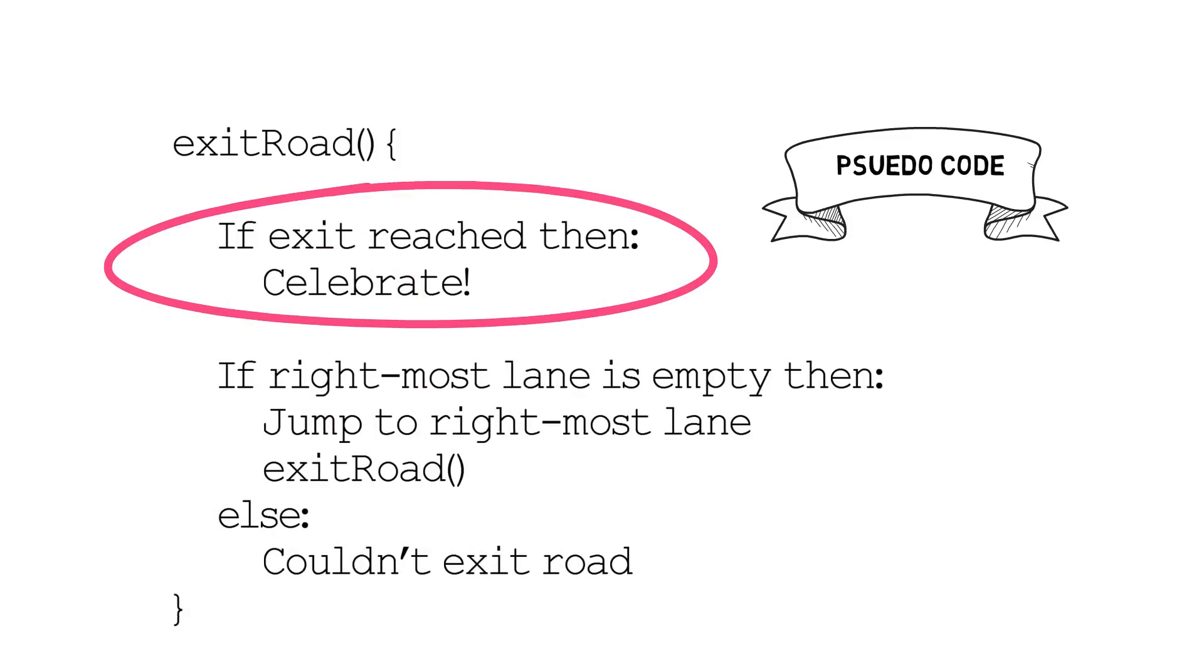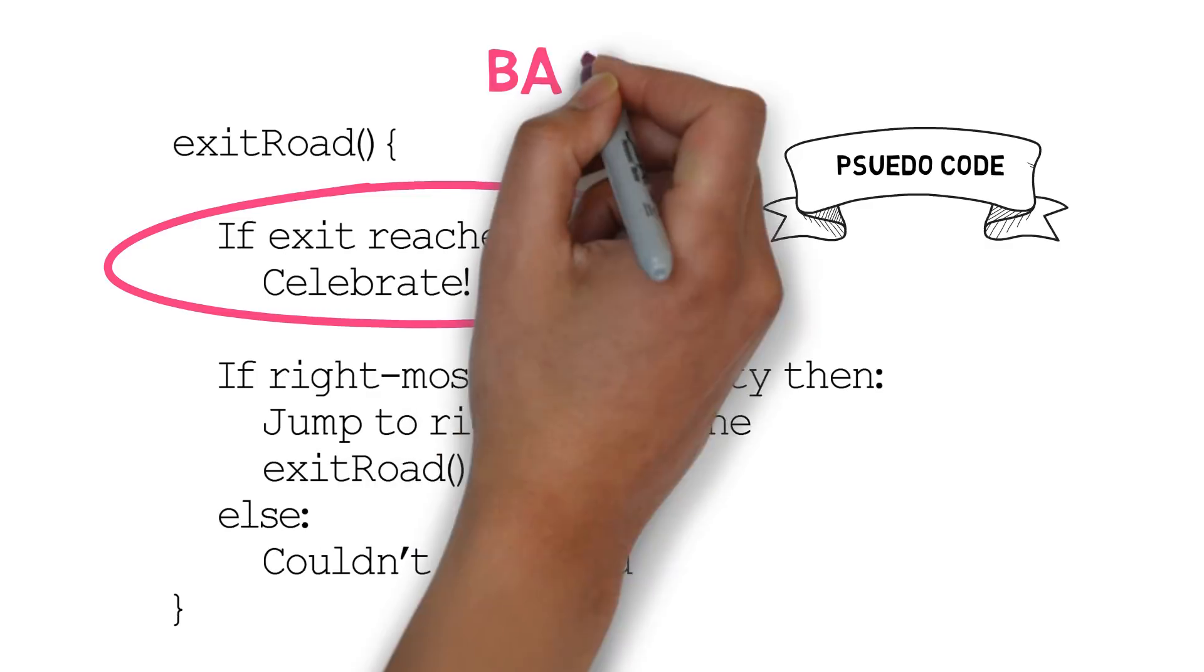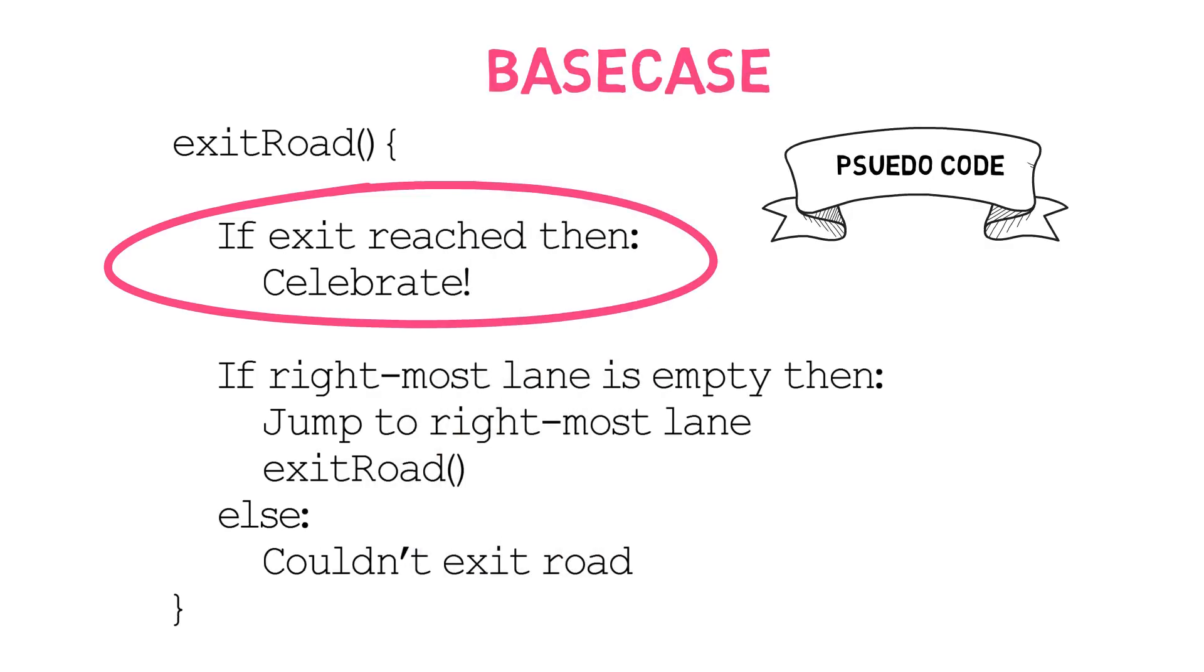This here is a very important part of a recursive function. This is called the base case. Here we check if we reached our target. And what is the point of that? The point is, if we don't do that, the function will recurse indefinitely with no stopping point. In this case, the program will crash as it will consume all the allowed memory before doing what it is supposed to do.